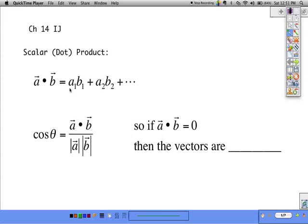The dot product, the result of it is, as it implies, it's a scalar, it's a number.